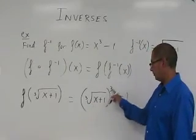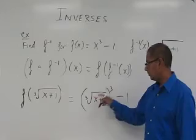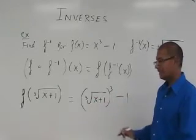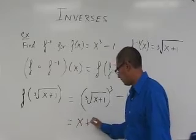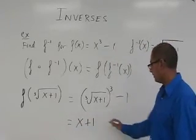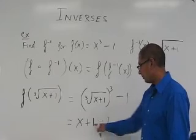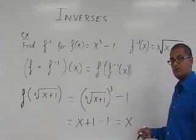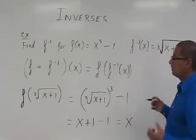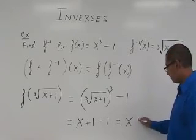So the cube root of x plus 1 cubed minus 1. But when you cube a cube root they just cancel out. So what we are going to be left with is x plus 1 because these cube root and cube cancel out. Minus 1. So x plus 1 minus 1 gives me x. And so yes it does satisfy that property of an inverse. When you compose the function with inverse you get back x.